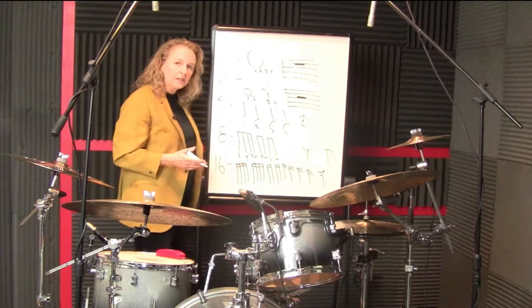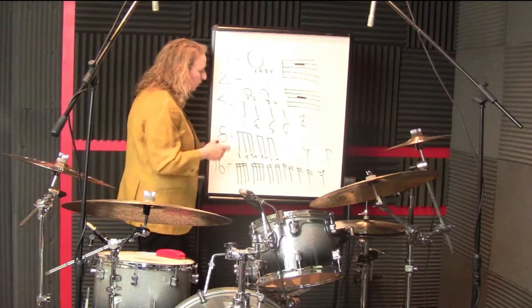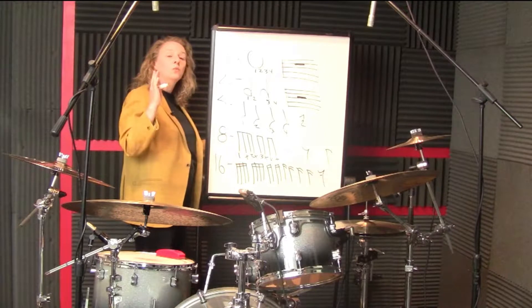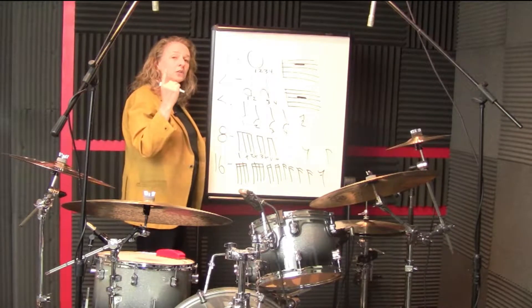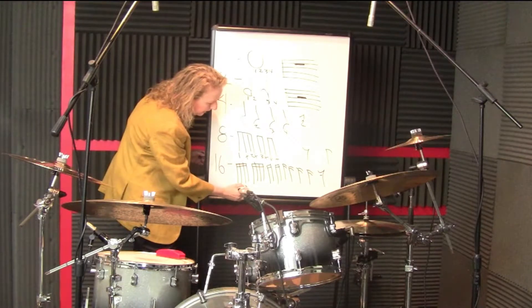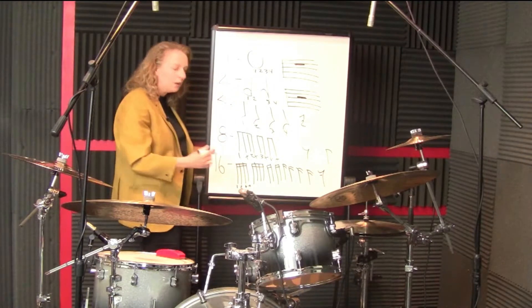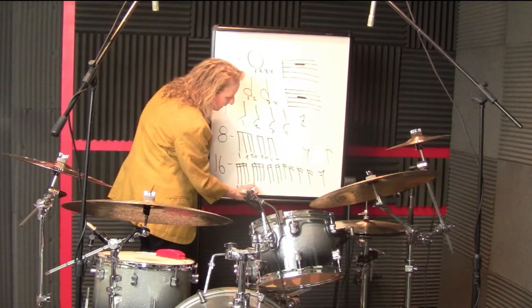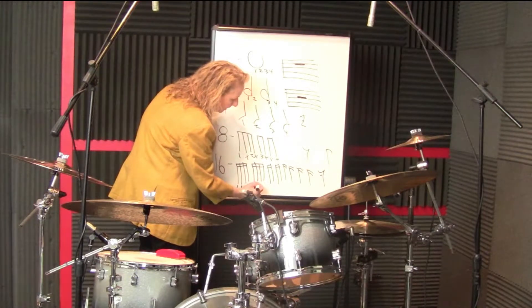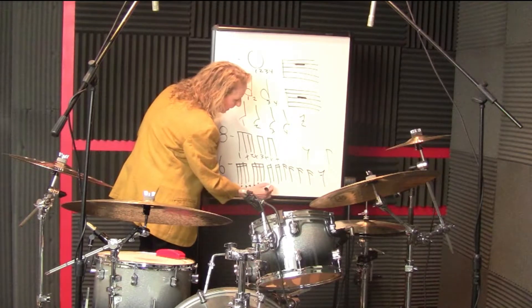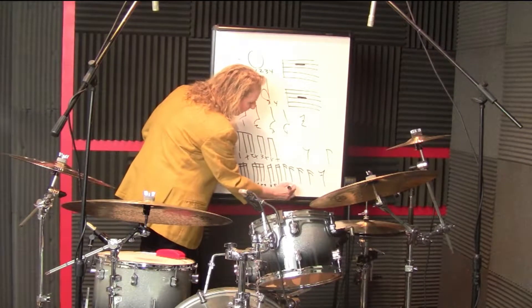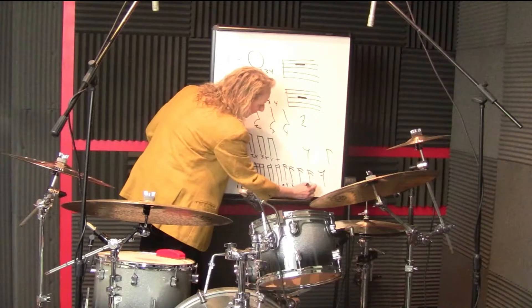With the sixteenth note, you switch into four-part counting. That means you're going: one, e, and, uh — two, e, and, uh — three, e, and, uh — four, e, and, uh. Each note gets an assigned number or letter, all the way up to four.